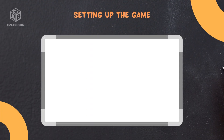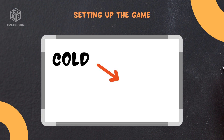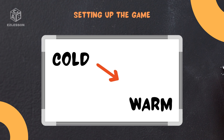To start, pick a word and write it at the top of the board. For our example, let's use the word "cold." Our goal is to transform this word into another word — let's say "warm" — by only changing one letter at a time.